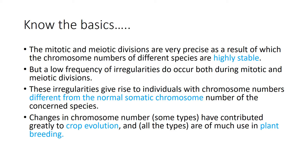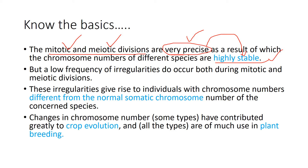Before going into the mainstream topic, let's brush up on some basics. There are two kinds of cell divisions: mitotic division and meiotic division. These divisions are very precise — in the number, manner, and timing of division. All these divisions are meticulously planned, and this gives rise to the stability of organisms. This precision maintains the chromosome number of different species as stable.